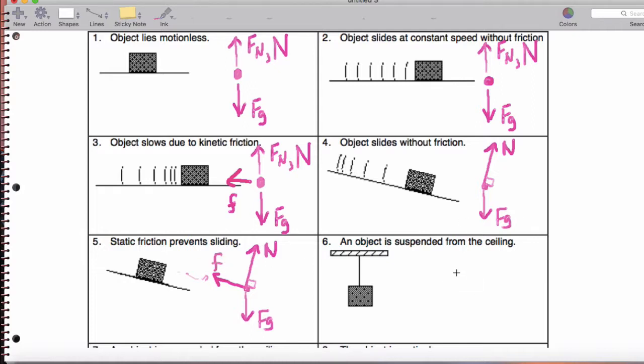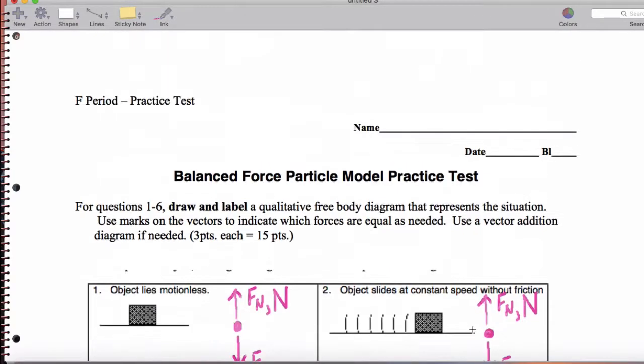When we have an object suspended from a ceiling, we don't have a normal force. A normal force comes from our surface. We have a tension going up. And we have the weight force pointing down. So that is page one of your practice exam. And we'll take a look at page two in a second.